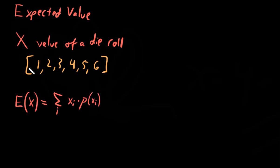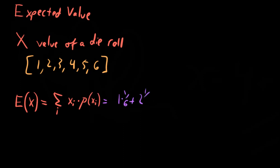Let's do this for the purpose of a die roll and see what we get. There are six values, so this is equal to 1 times the probability of getting a 1, which is 1/6, plus 2 times the probability of getting a 2, which is 1/6 again, and so on for all of them. We can factor out the 1/6, and then it's just 1 plus 2 plus ... plus 6.